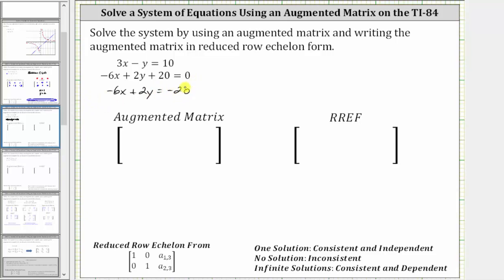This is the form of the equation we use to form the augmented matrix. So looking at the first equation, because the coefficient of x is 3, the coefficient of y is negative 1, and the constant term on the right is 10, the first row of the augmented matrix is 3, negative 1, 10.